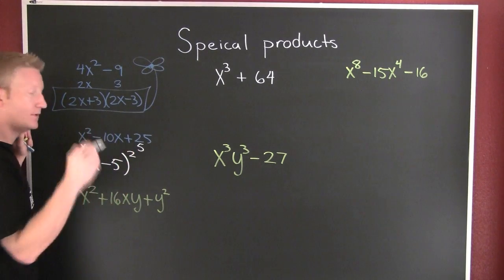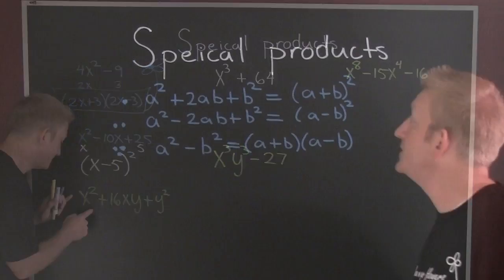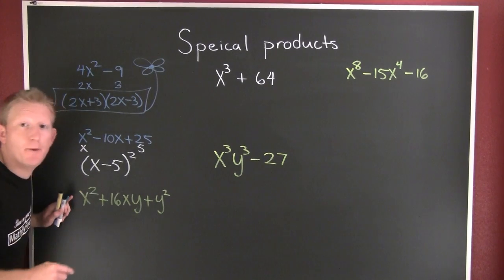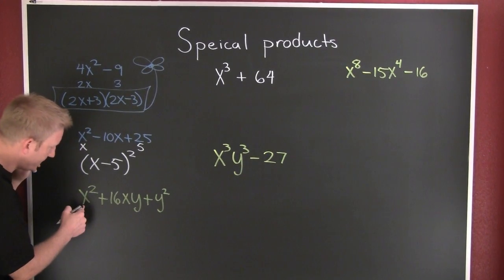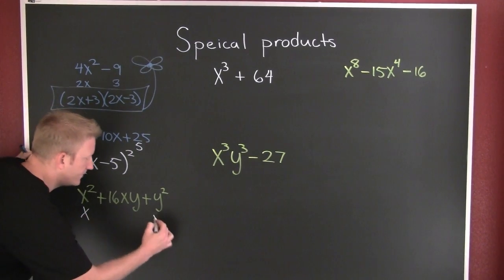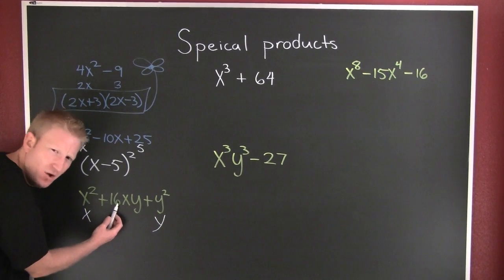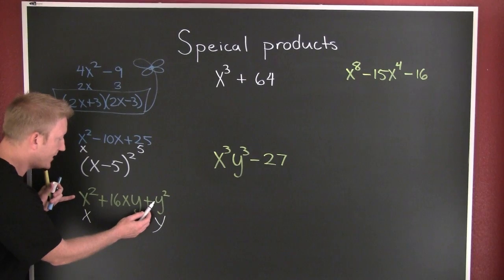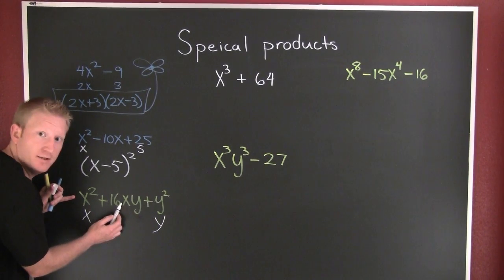Which one is this? It appears to be a perfect square. Let's check. Is this the square of something? x. Is this the square of something? y. This one times that one, double it — is that 16x? No! Now we take a look. Products of the leading and lagging terms: 1 times 1. Are there any factors of 1 that add to be 16? No. Prime.